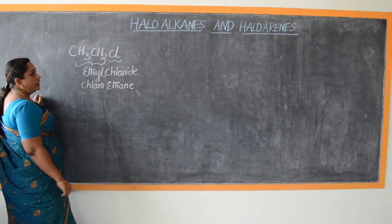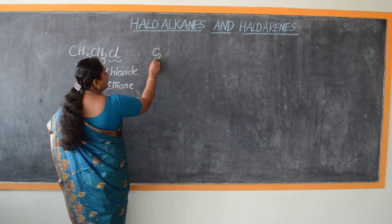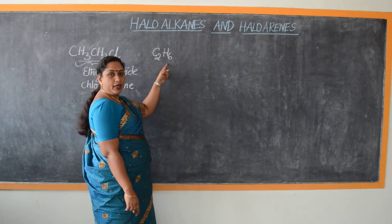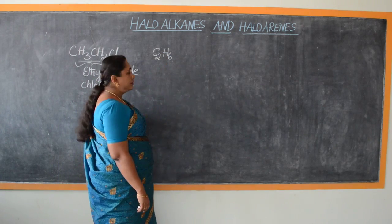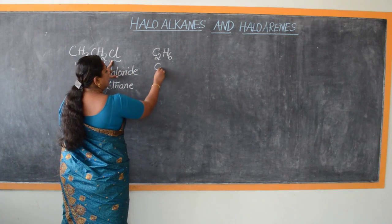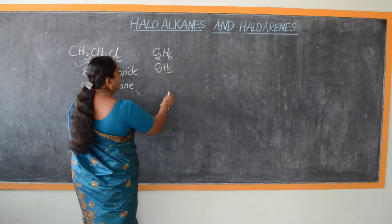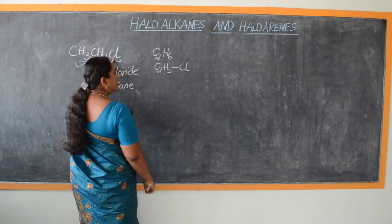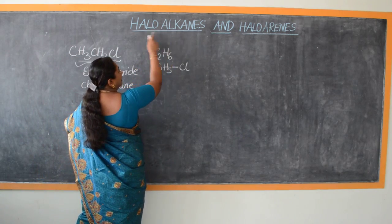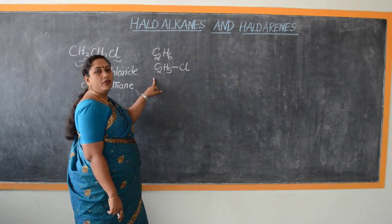We call this chloroethane because the ethyl group — originally ethane with molecular formula C2H6 — lost one hydrogen atom, which was substituted by the halogen, namely chlorine. Therefore it becomes C2H5Cl, and the compound gets the name chloroethane: halo = chloro, alkane = ethane. This is an example of a haloalkane, and in this case we find the presence of a single halogen.